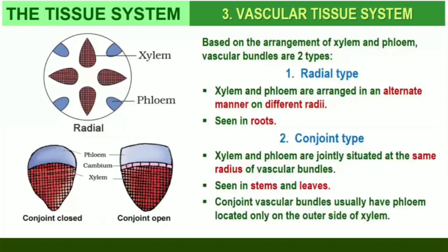When xylem and phloem within a vascular bundle are arranged in an alternate manner on different radii, the arrangement is called radial, such as in roots. In conjoint type of vascular bundles, the xylem and phloem are situated at the same radius of vascular bundles. Such vascular bundles are common in stems and leaves. The conjoint vascular bundles usually have the phloem located only on the outer side of xylem.